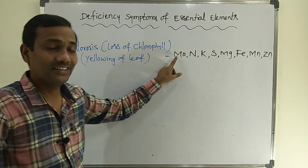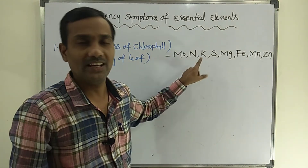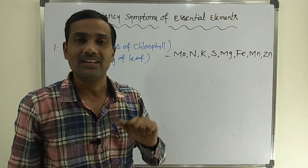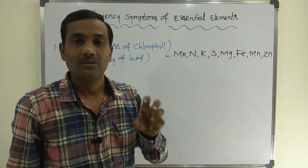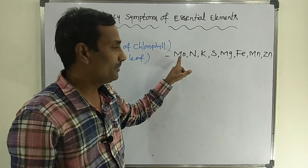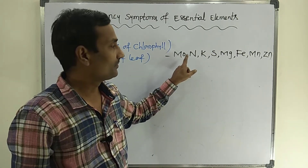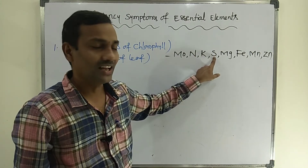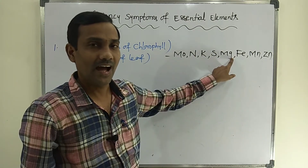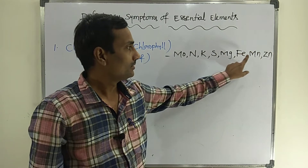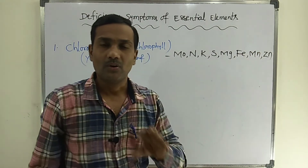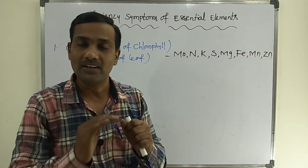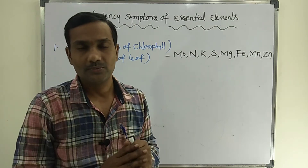Every one of these elements plays an important role in keeping the leaf green. The elements responsible — molybdenum, nitrogen, potassium, sulfur, magnesium, iron, manganese, and zinc — all contribute to green-colored leaves. Deficiency of any one of these mineral elements leads to chlorosis.